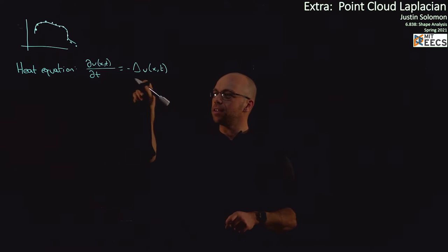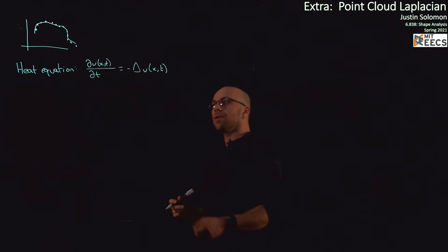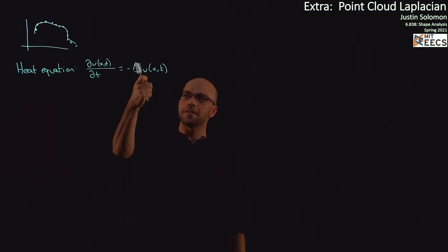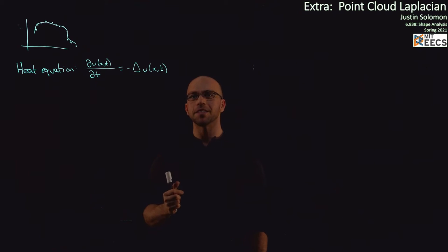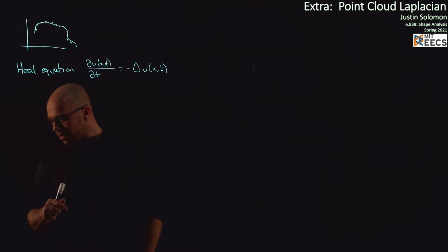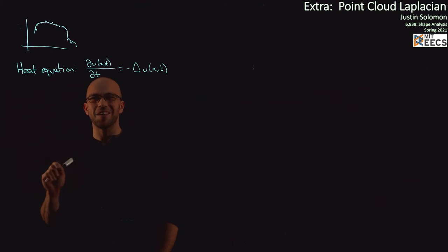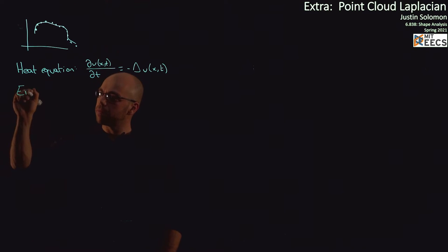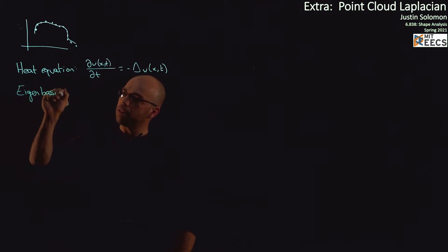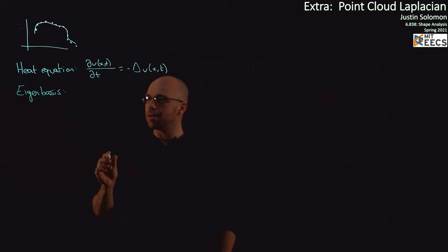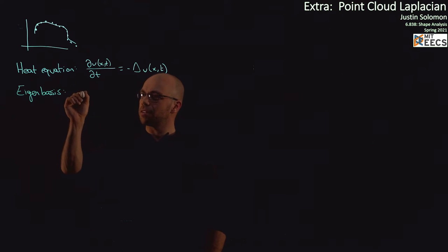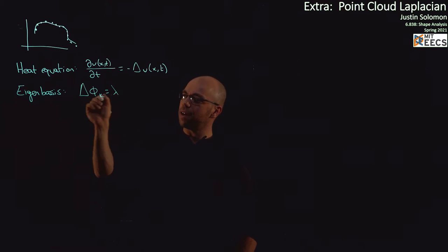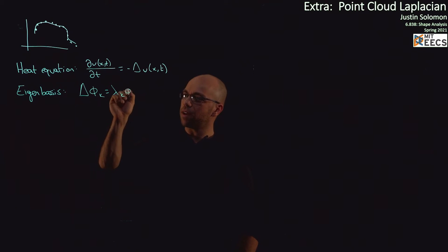The only difference between the heat equation and the wave equation is that the wave equation has two derivatives in time, and the heat equation has one derivative in time. Also remember that this Laplacian is only taken in the x-coordinate — that's the convention we're taking in our class. So the first thing we have to do is convince ourselves that we know how to solve this. We're going to take an eigenbasis, which is just the set of eigenfunctions of the Laplace operator. We'll have a bunch of functions φ_k with the property that the Laplacian applied to φ_k equals some eigenvalue λ_k times φ_k.